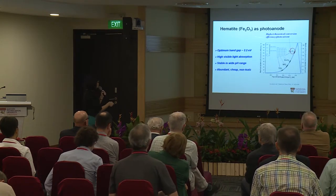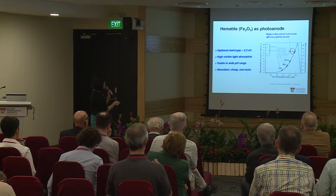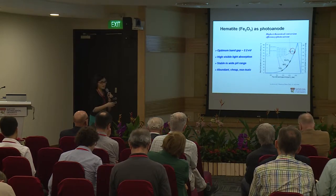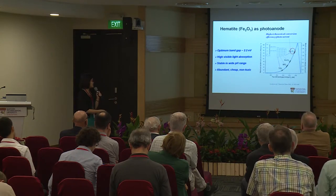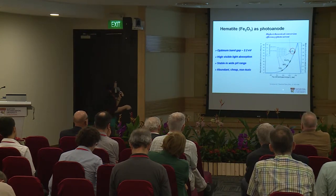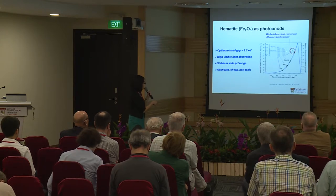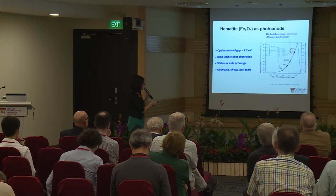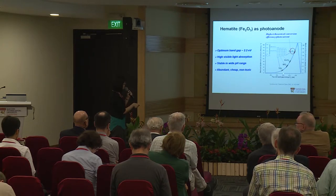Hematite, briefly, has a nice bandgap of 2.2 eV, so it has reasonably good visible light absorption. It is stable in a wide pH range because it is rust — already very stable in its natural form. It's abundant, cheap, and non-toxic. Among most metal oxide semiconductors studied as a photoanode, the highest theoretical conversion efficiency is achieved by iron oxide, just by looking at the bandgap energy. Titanium dioxide is actually not very high here.